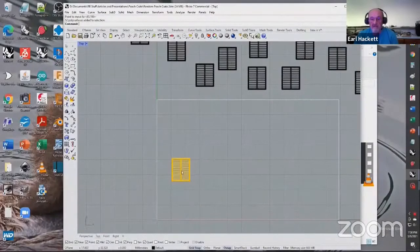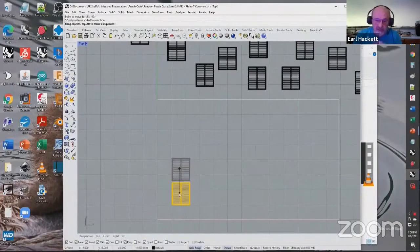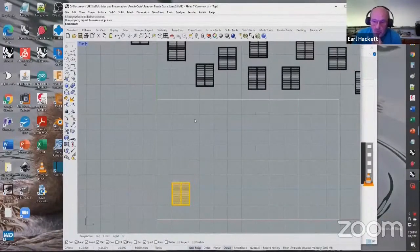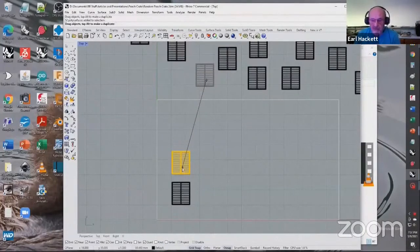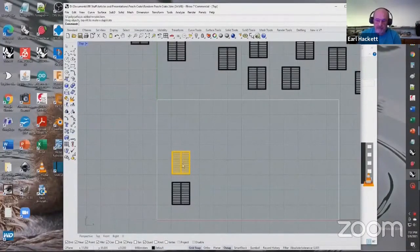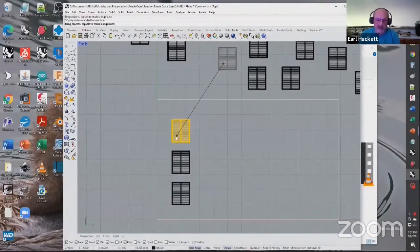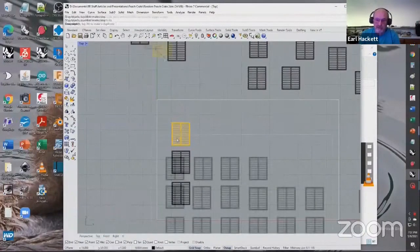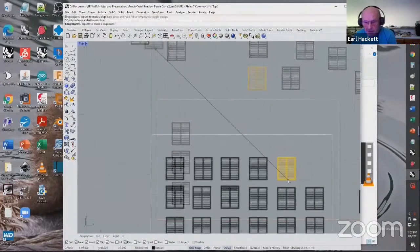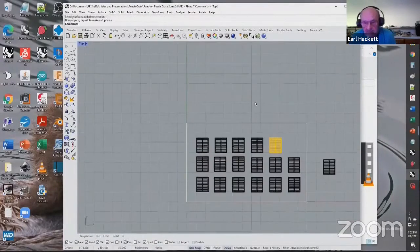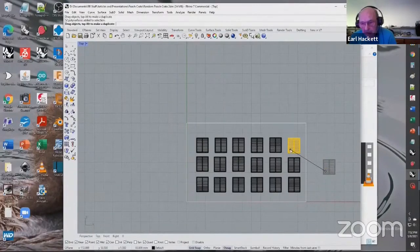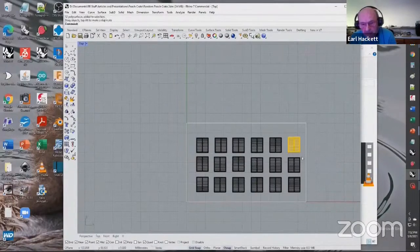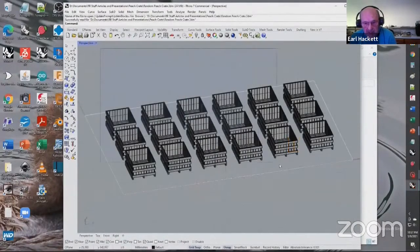So after you get them all made, we're going to position them on the build plate. This white line indicates the region of the area that I can print on. So you just take all these crates that I made and just start positioning them. And you get them all positioned. And now we're ready to export it. That's what they look like sitting on the build plate.